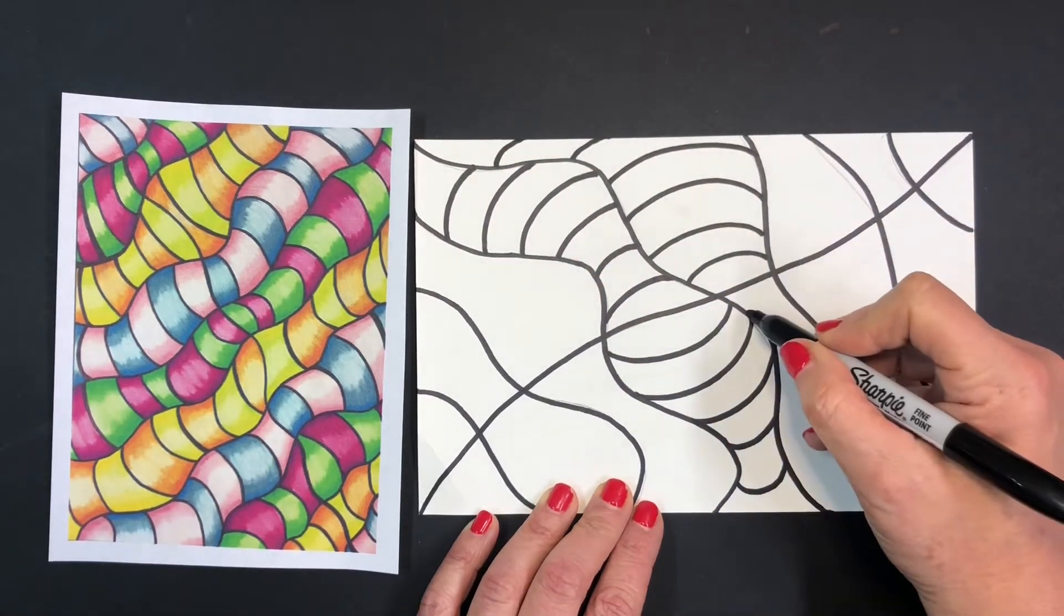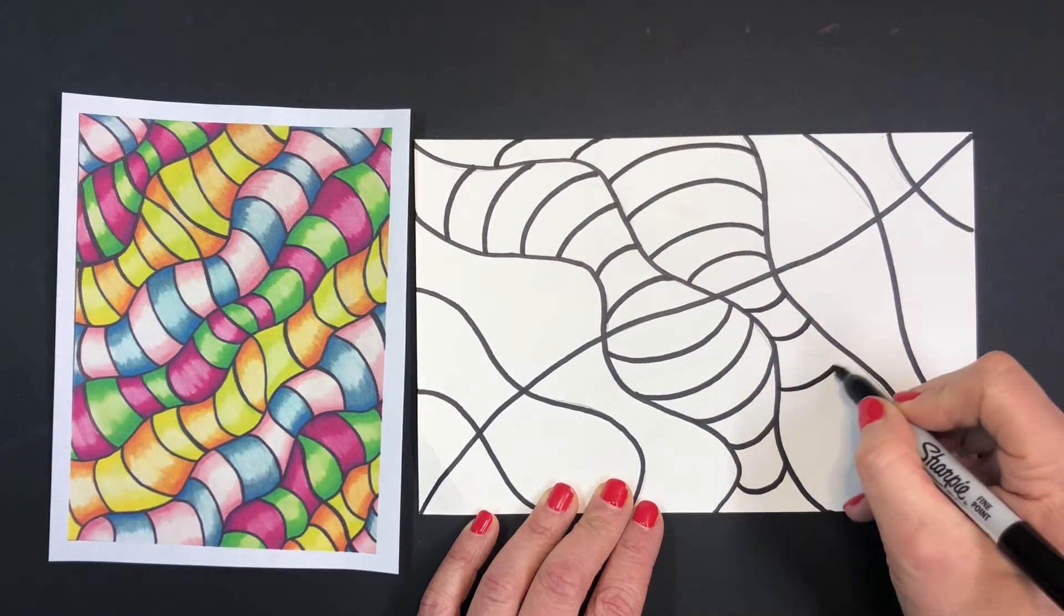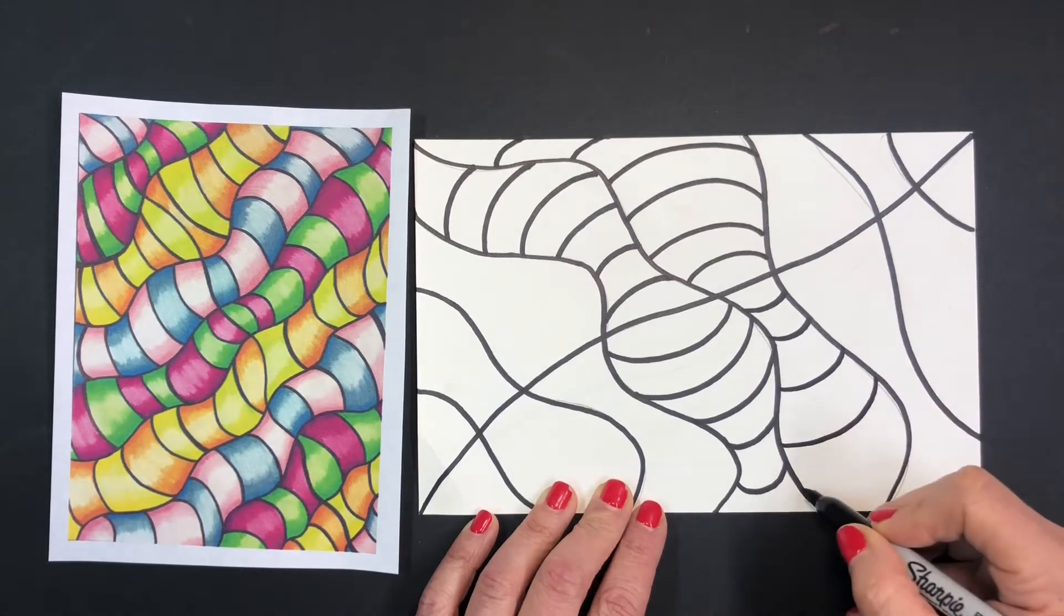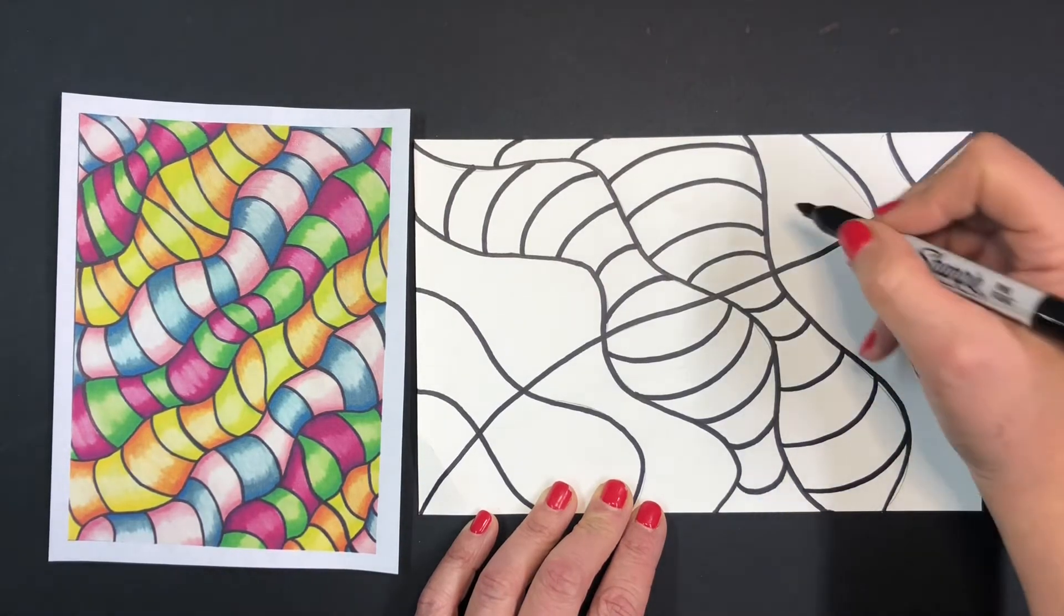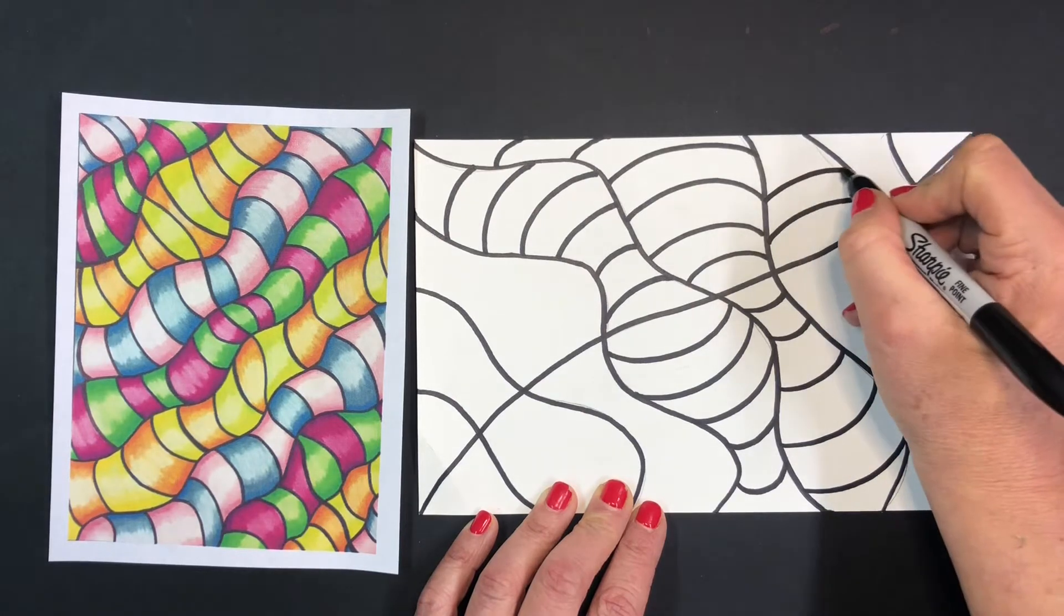So if you want to add skinnier tubes, you will have less to shade in, but you might have more to shade in across the page.